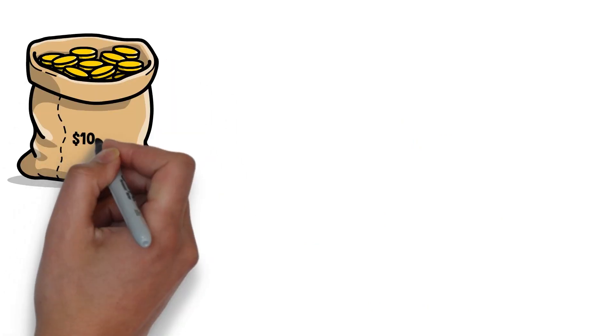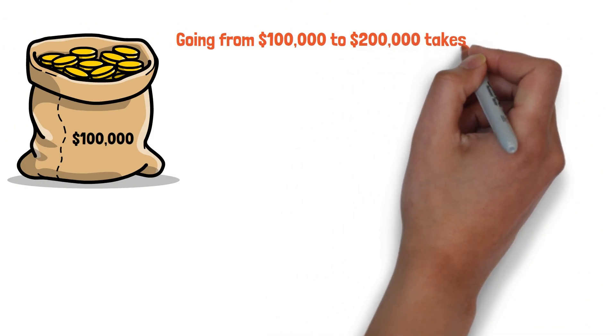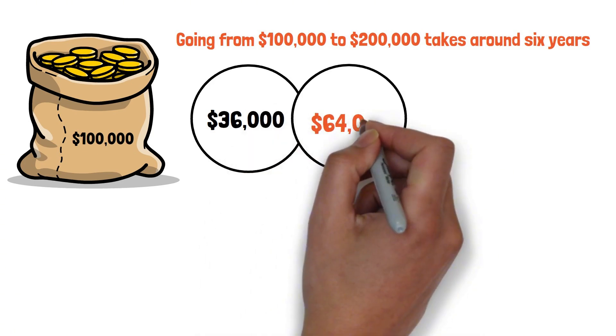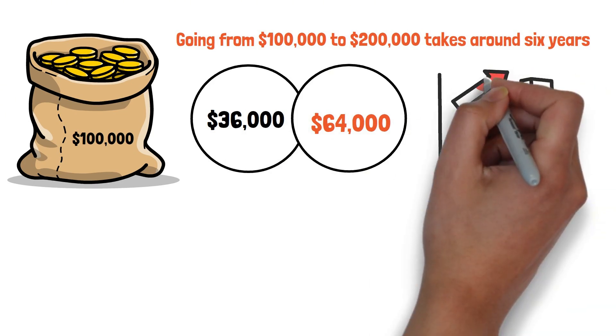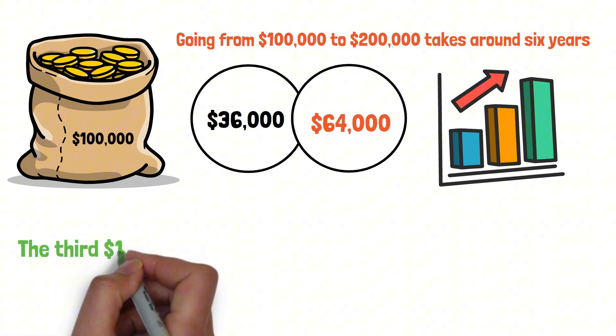But something remarkable happens once you hit $100,000. Going from $100,000 to $200,000 takes around 6 years. And this time, you only contribute $36,000 while compounding adds around $64,000. In other words, the growth flips. Compounding is doing nearly twice as much work as you.